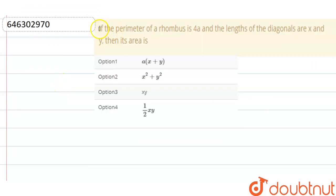Hello everyone. So our question is, if the perimeter of a rhombus is 4a, and the length of the diagonals are x and y.